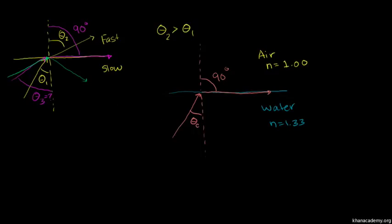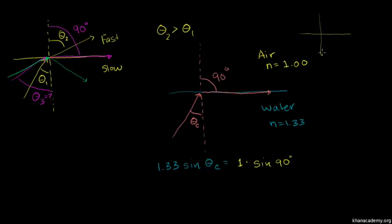So let's break out Snell's law. We have the index of refraction of the water, 1.33, times the sine of our critical angle — sine of theta critical — equal to the index of refraction of the air, which is 1, times the sine of the refraction angle, so times the sine of 90 degrees. Now what is the sine of 90 degrees? You have to think about the unit circle — that's actually why the unit circle definition is useful. If you go 90 degrees on the unit circle, you are at the top, and the sine is the y-coordinate, which is 1. So sine of 90 degrees equals 1.